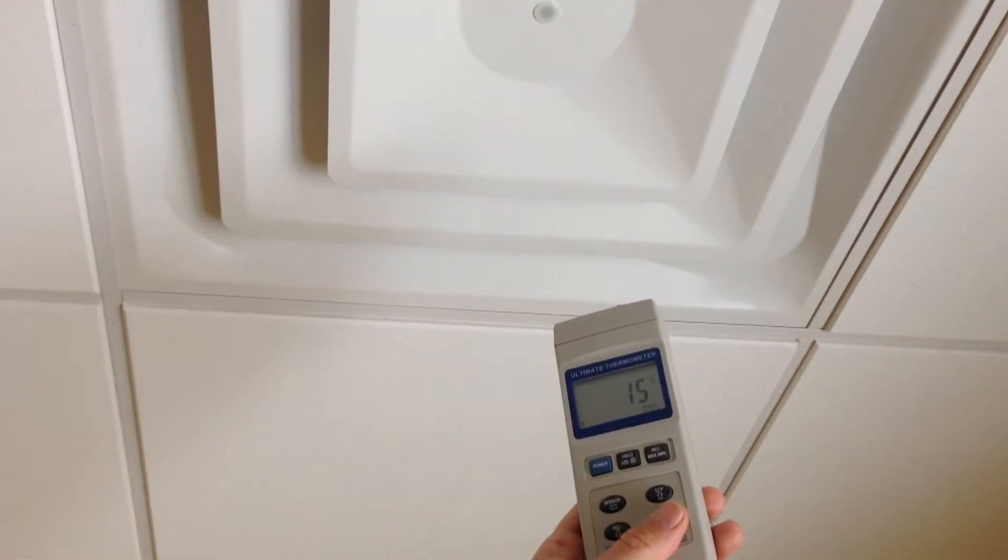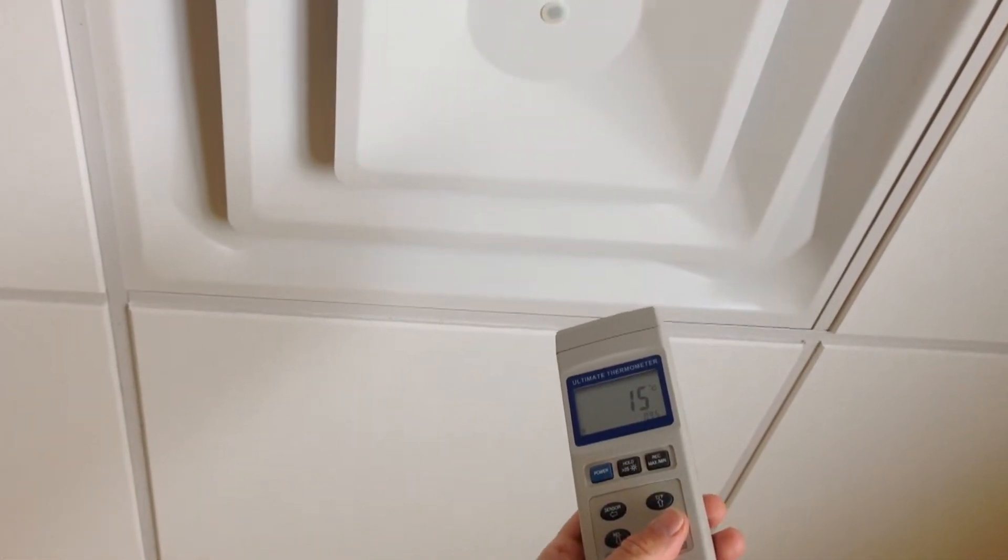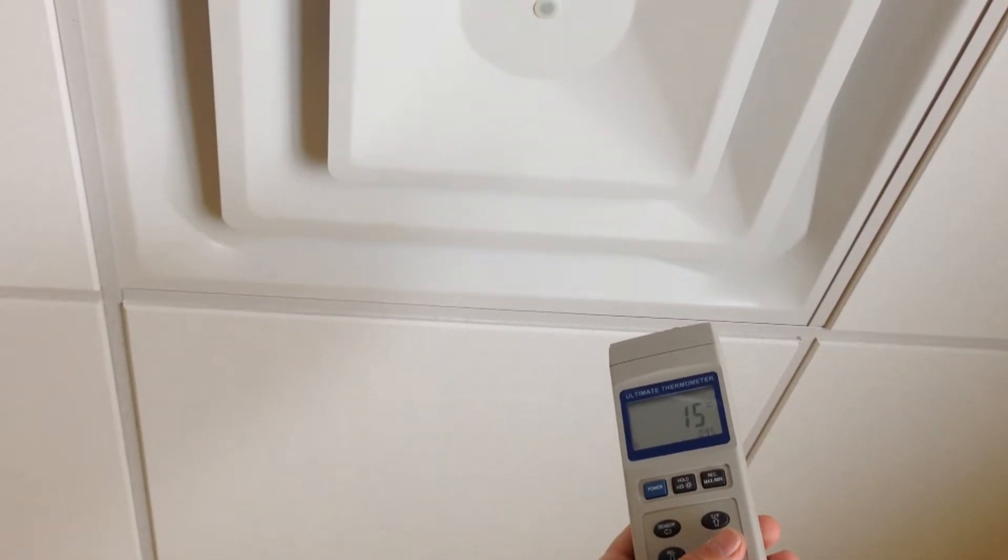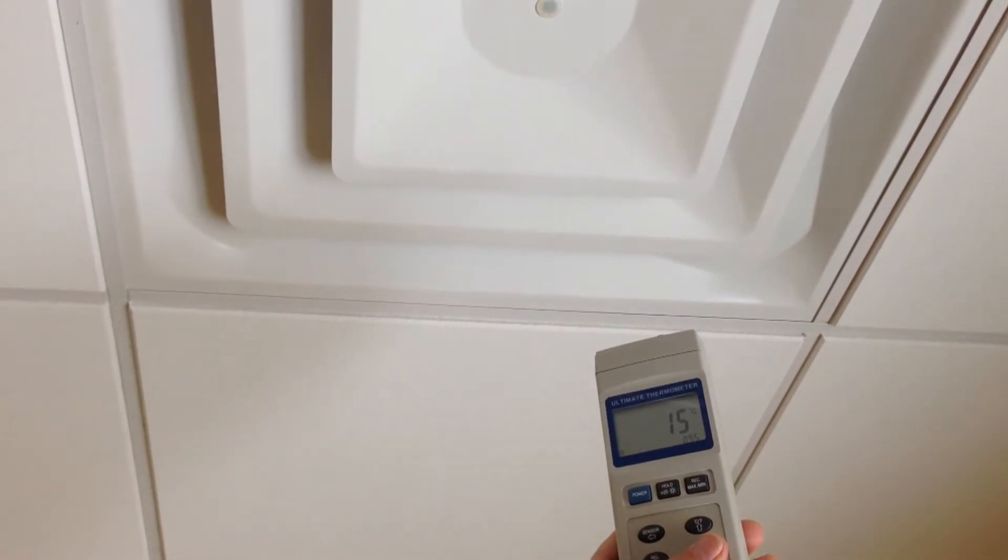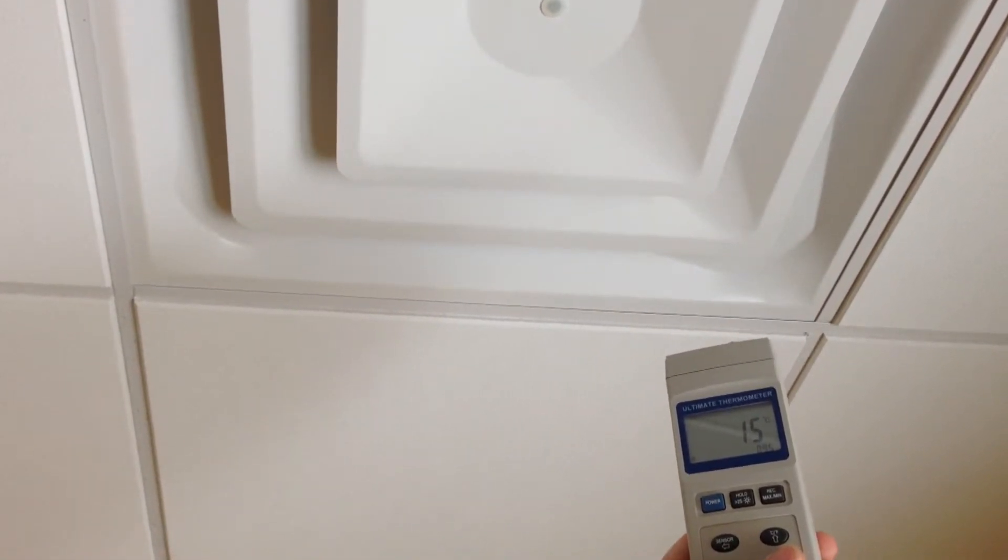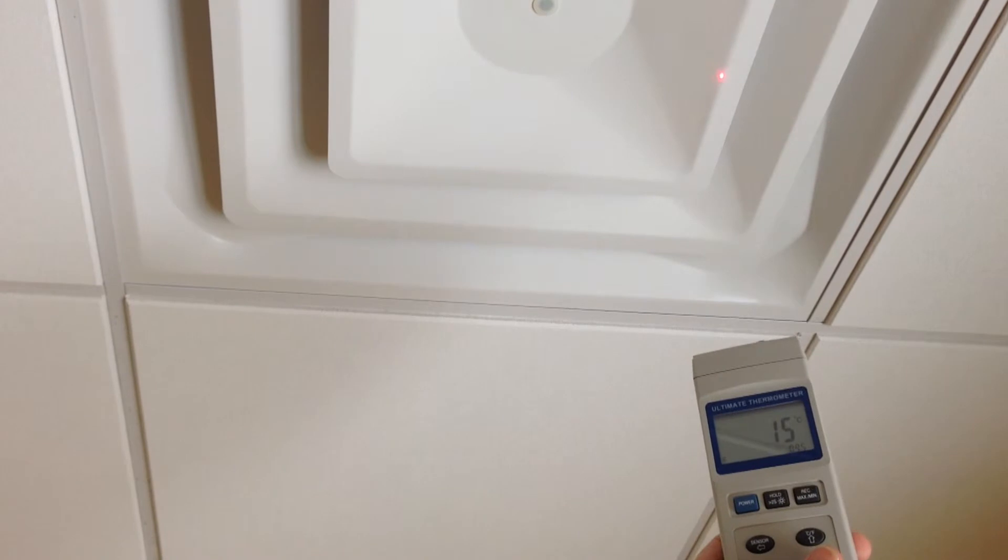When you need non-contact measurement of, for example, a running motor, a furnace, a petri dish, or something difficult to reach, simply point the built-in IR thermometer at the object you wish to measure, aim, press the button, and read the results.